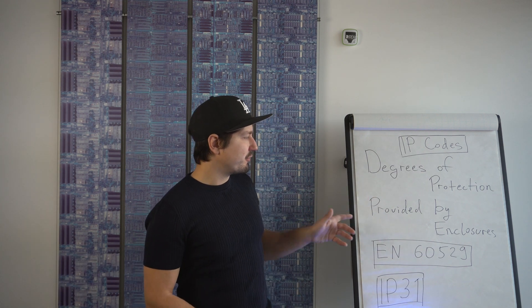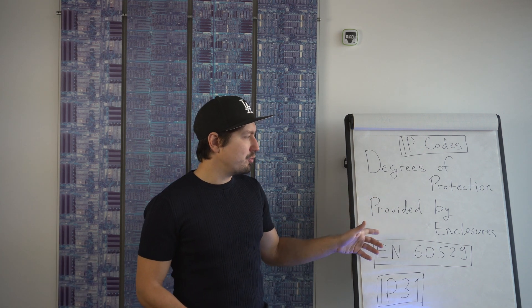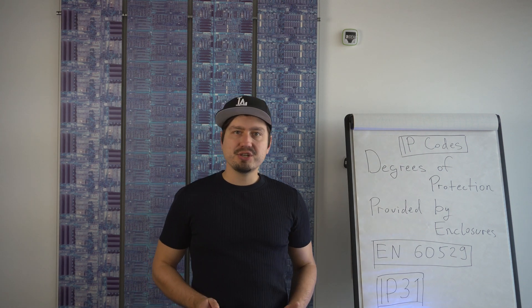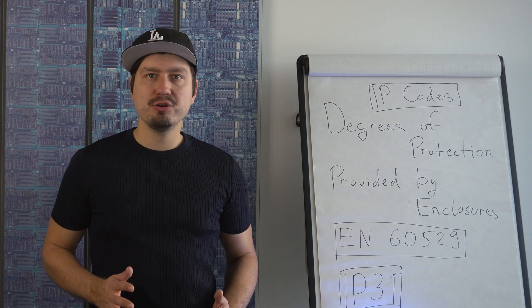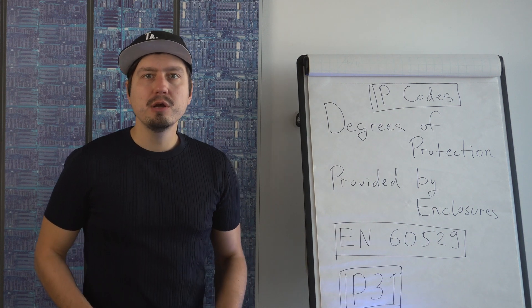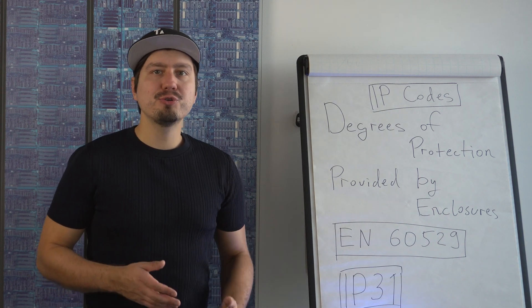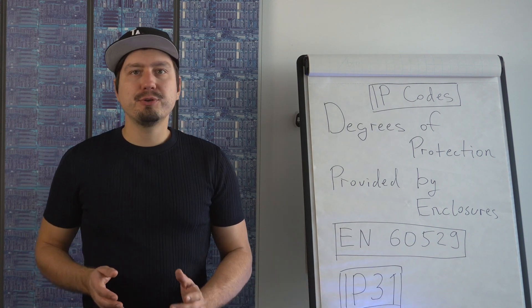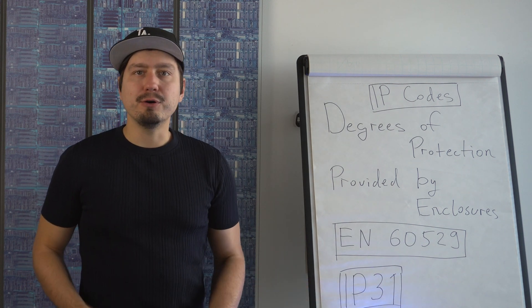In this video, we're going to talk about ingress protection and IP codes, and more specifically about degrees of protection provided by enclosures, EN 60529 international standard. To make this video useful, we will also take a product to a test house and perform the testing to IP-31 level, and I will explain what it means.